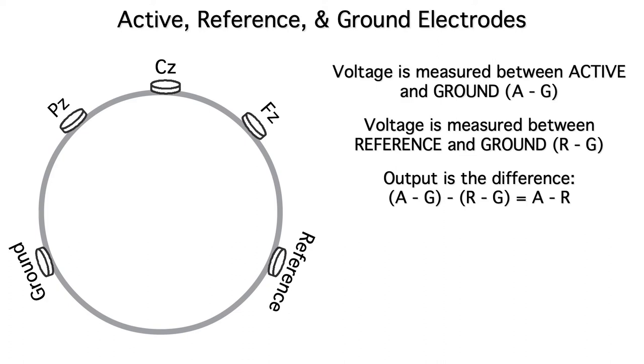We then take the difference between the active to ground voltage and the reference to ground voltage. This gives us A minus G minus R minus G. If you do the algebra, you'll see that the G drops out, giving you A minus R. And A minus R is equivalent to the voltage between the active and reference electrodes. So even though we don't directly measure the active to reference voltage, that's what we end up with after our referencing procedure.